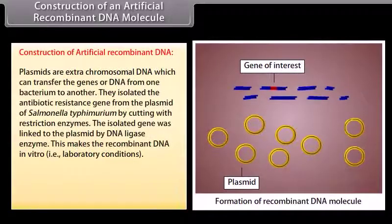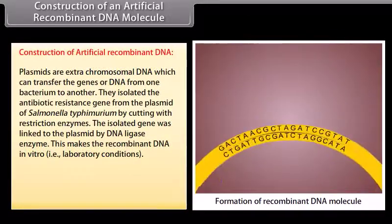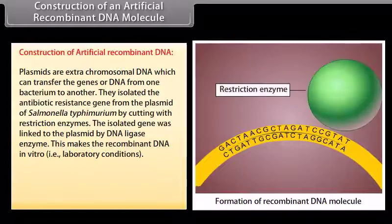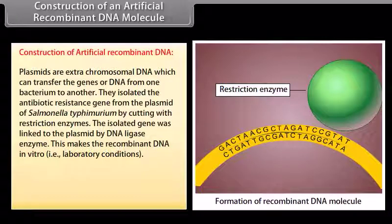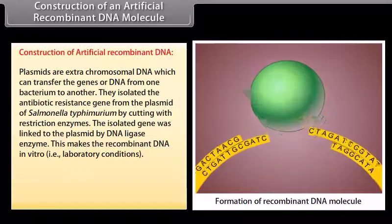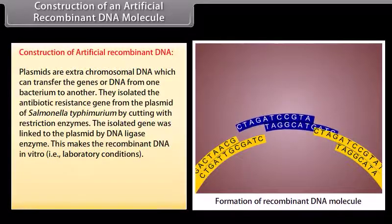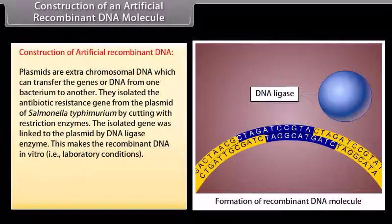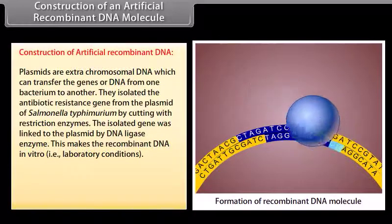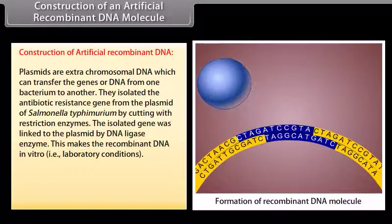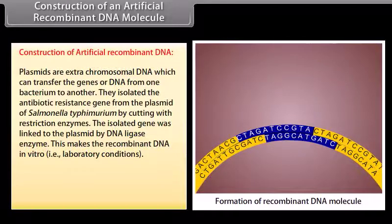Construction of artificial recombinant DNA. Plasmids are extra-chromosomal DNA, which can transfer the genes or DNA from one bacterium to another. They isolate the antibiotic resistance gene from the plasmid of Salmonella typhimurium by cutting with restriction enzymes. The isolated gene was linked to the plasmid by DNA ligase enzyme.